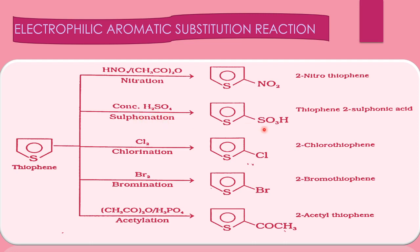In sulfonation, the SO₃H group is attached to the second position — its name is thiophene-2-sulfonic acid. Similarly, Cl group is attached in chlorination to give chlorothiophene. Bromine addition is the bromination reaction and the product is 2-bromothiophene. An acyl group attached at the second position gives 2-acylthiophene. You have to write this type of electrophilic aromatic substitution reaction, and the mechanism is same as already explained for furan and pyrrole.